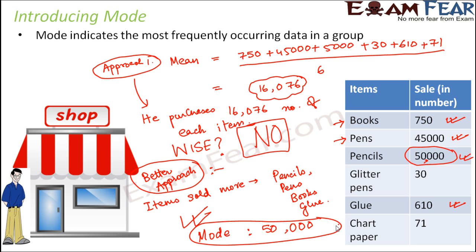Looking at this example: imagine a shopkeeper selling different things — sometimes books, sometimes pens, sometimes pencils. If throughout the year you observed that most of the time, more than half the time, he was selling a pencil, then pencil corresponds to the data occurring the maximum number of times. When you look at the overall set of data, pencil is the most dominating — it happened most often. So pencil is the central tendency of the group, and mode represents central tendency in a different way than arithmetic mean.